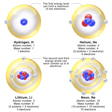Other fusion reactions produce much less energetic neutrons. DD fusion produces a 2.45 MeV neutron and helium-3 half of the time, and produces tritium and a proton but no neutron the rest of the time. D-³He fusion produces no neutron.